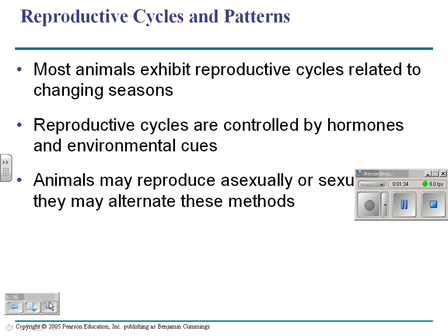Many animals use reproductive cycles, whether asexually or sexually. A lot of times it's related to seasons. Many are controlled by hormones and cues from the environment. It could be temperature. It could be the amount of light — kind of like plants that way.